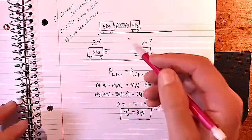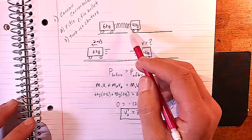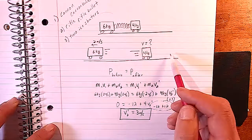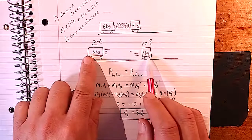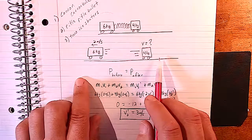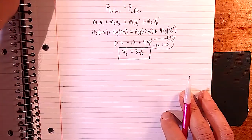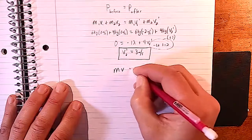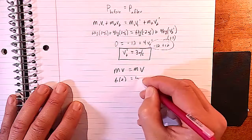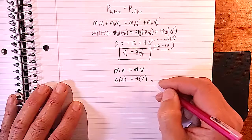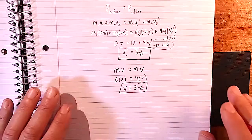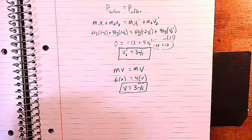A useful shortcut for explosion problems: since the system starts at rest, the magnitude of each cart's momentum must be equal and opposite. So you can simply write mv = mv and ignore direction: 6 × 2 = 4 × v, giving v = 3 m/s. Just remember to assign directions correctly at the end.